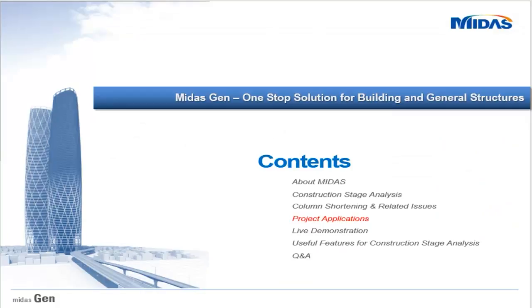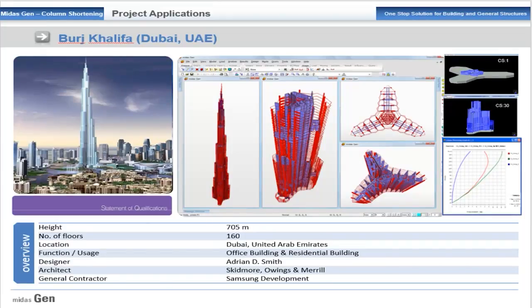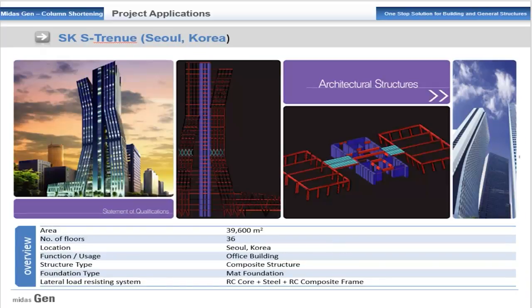Let us look at project applications of Midas Gen that have used column shortening analysis. The Burj Khalifa, 705 meters height, 160 floors, located in Dubai, was analyzed in Midas Gen by general contractor Samsung Development. In order to account for time-dependent concrete effects, a comprehensive construction sequence considering creep and shrinkage effects was used. Another application is the SKS channel in South Korea, with 36 floors all having different shapes — a composite structure with a reinforced concrete core, steel installations, and RC composite frames.